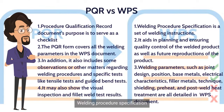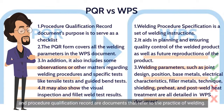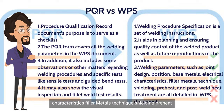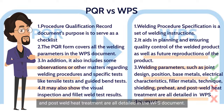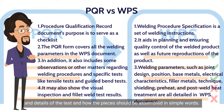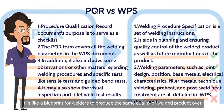Welding procedure specification (WPS) and procedure qualification record (PQR) are documents that refer to the practice of welding. WPS is a set of welding instructions — welding parameters such as joint design, position, base metals, electrical characteristics, filler metals, technique, shielding, preheat, and post-weld heat treatment are all detailed in the WPS document. WPS further explains the rules and details of the test and how the pieces should be assembled. In simple words, it is like a blueprint for welders to produce the same quality of welded product over and over again.